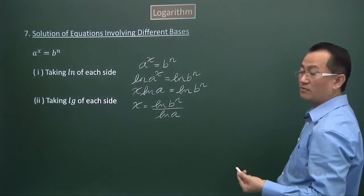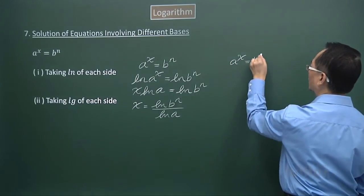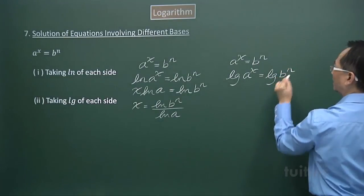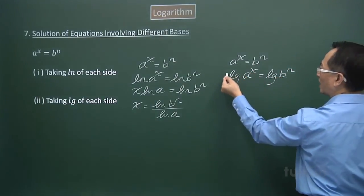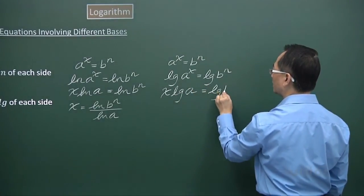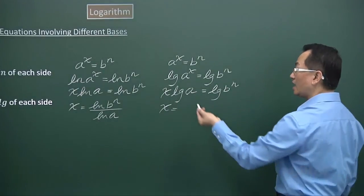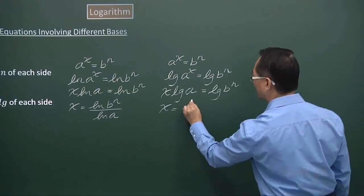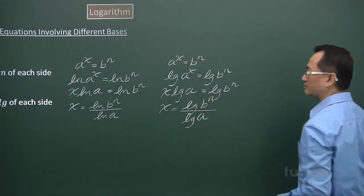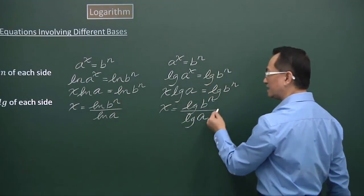For part 2, instead of taking ln, we take lg (log base 10). So lg of a to the power x equals lg of b to the power n, and the index x becomes a multiplier: x times lg a equals lg(b^n). Dividing both sides by lg a gives x equals log base 10 of b^n divided by log base 10 of a. Either approach yields the same final result.